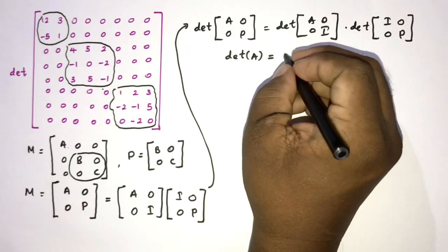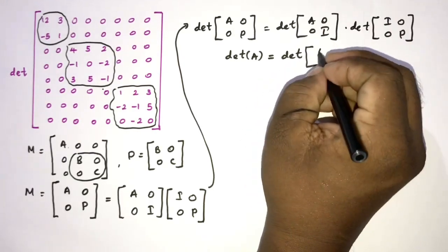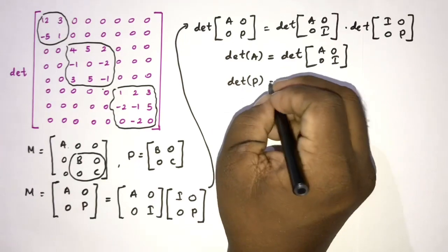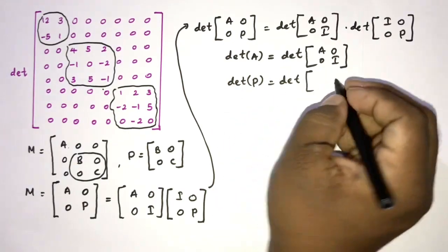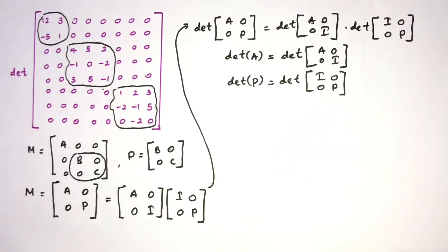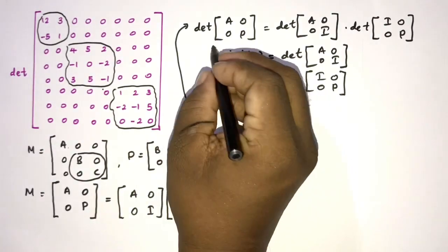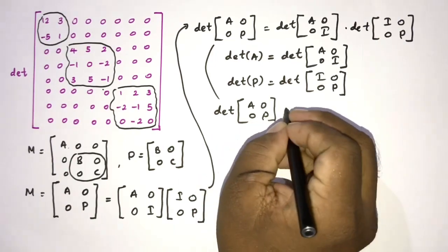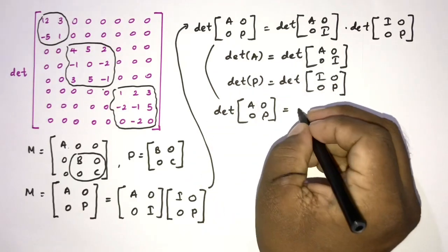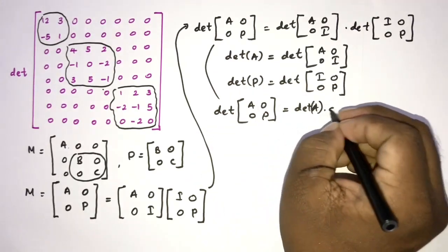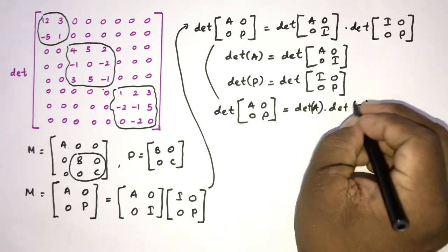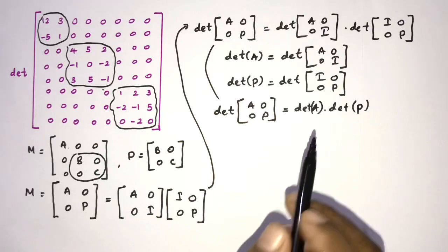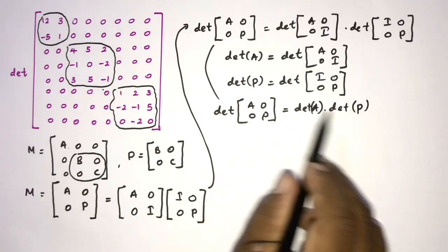Then after repeated row reduction we can see det here A, 0, 0, 0, P is equal to det here A, 0, 0, 0, 0, P. Then we can write here we have det here A times det of P.